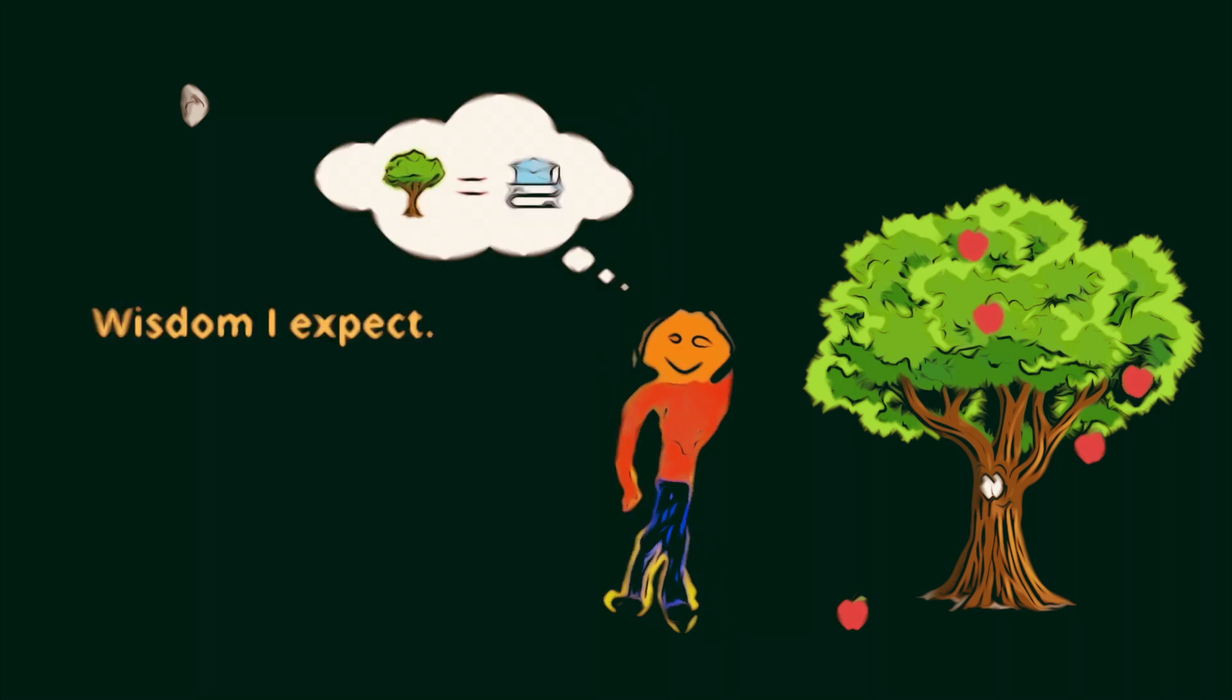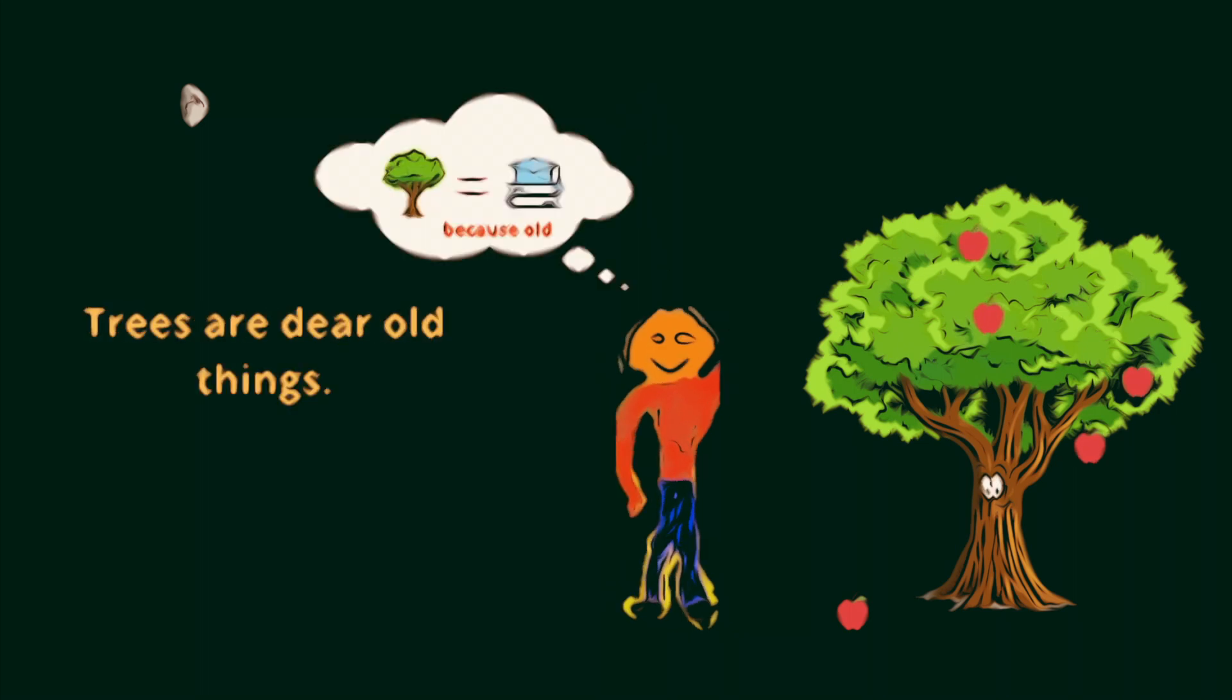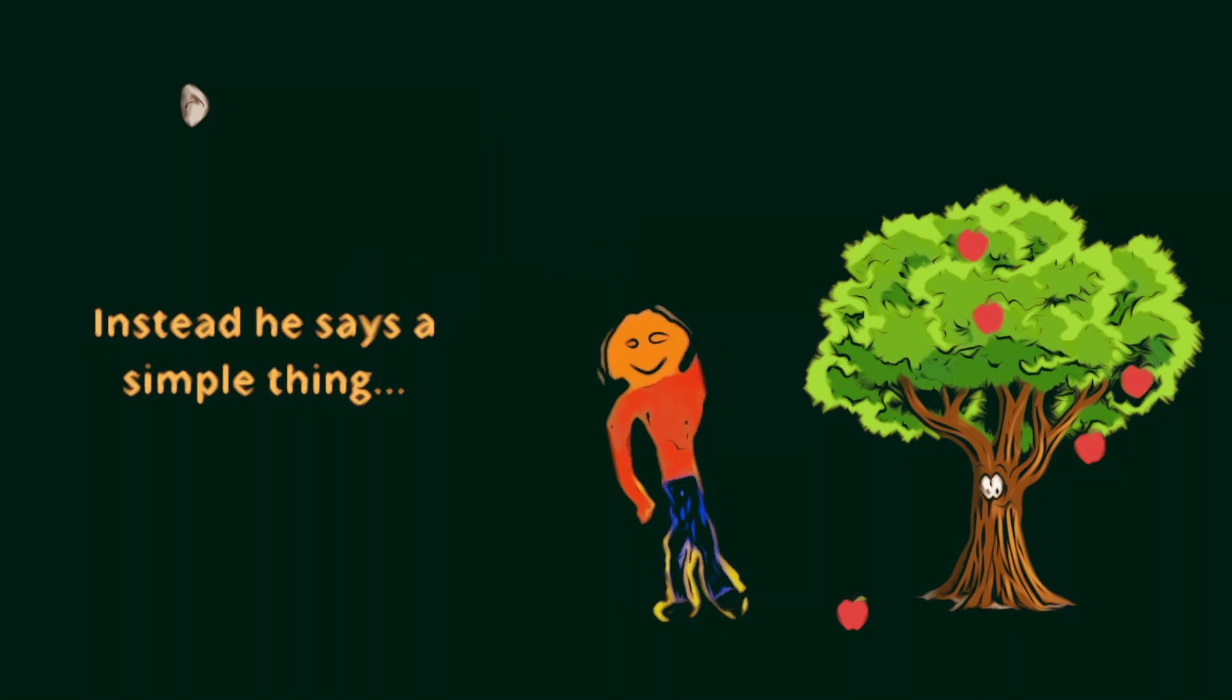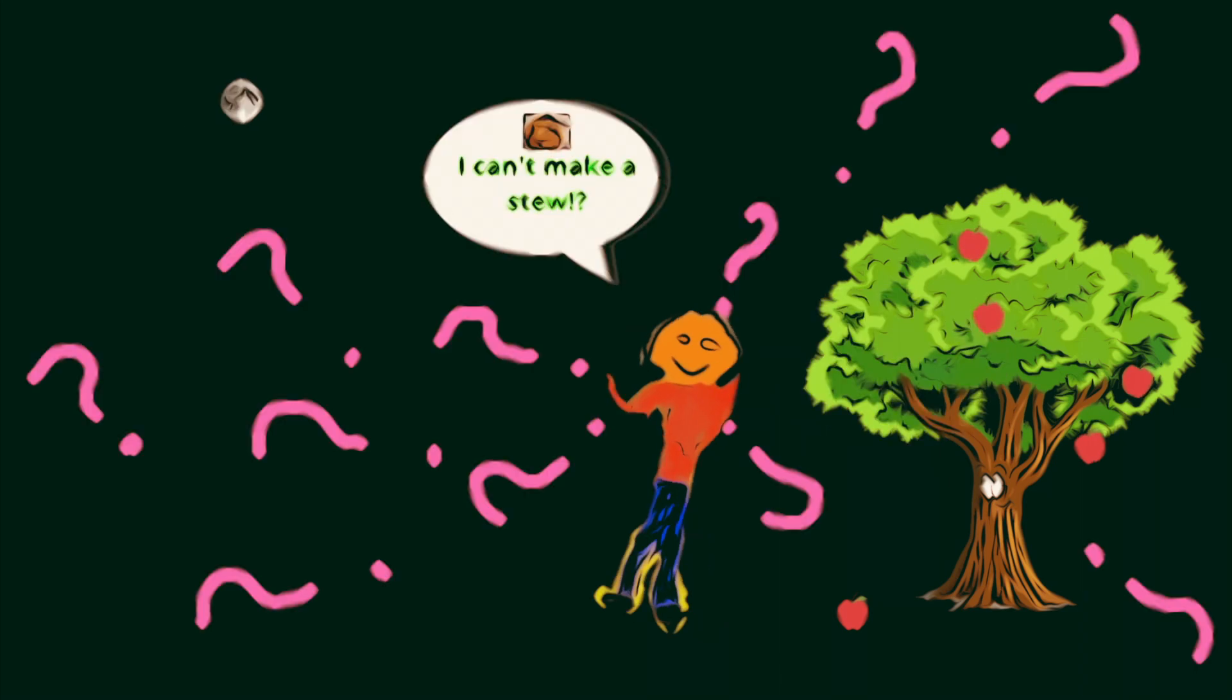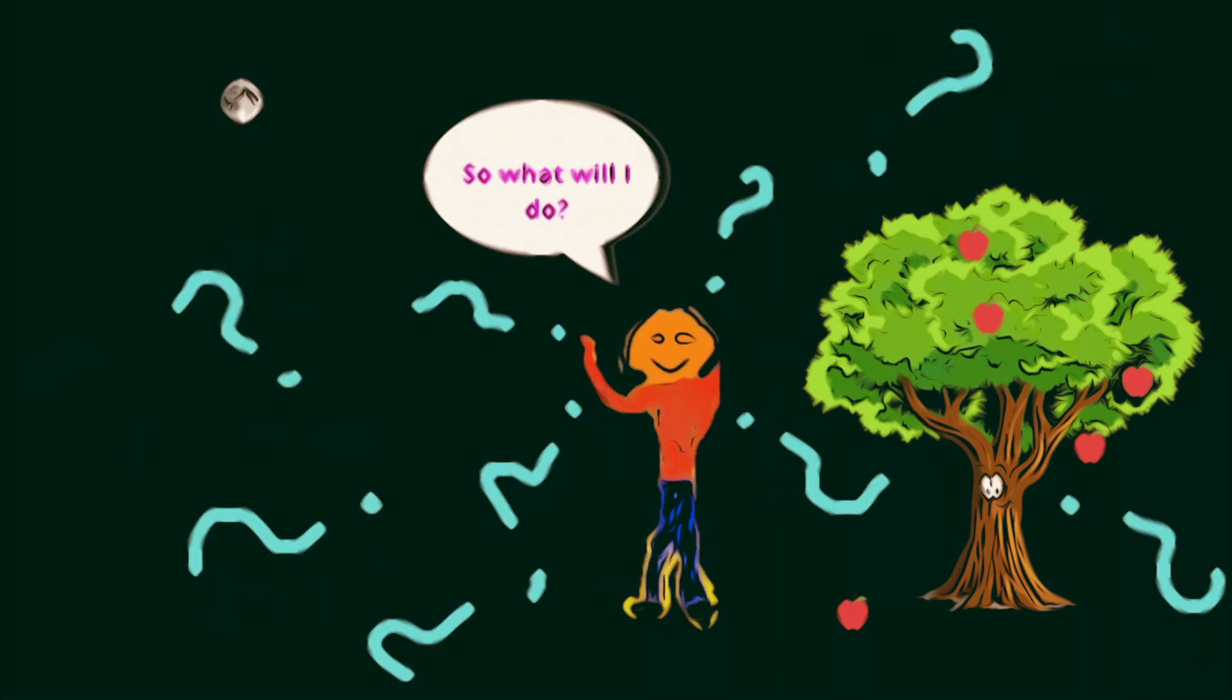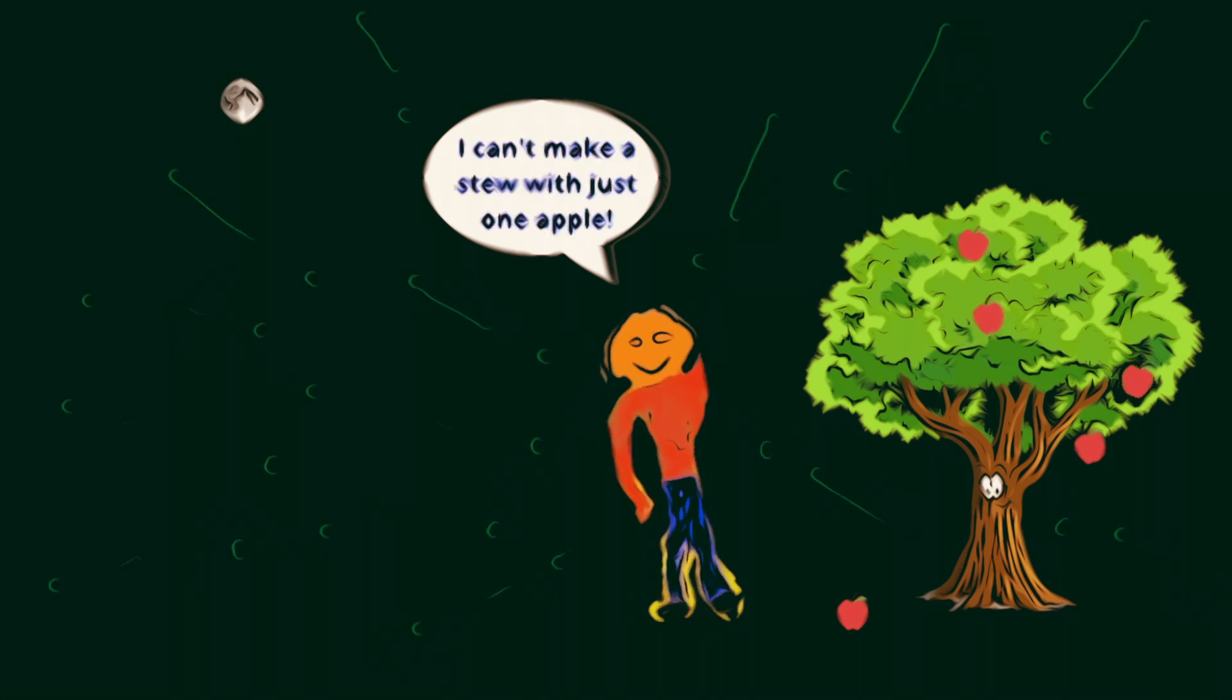Wisdom I expect. Trees are dear old things. Instead he says a simple thing, why not make a stew? I can't make a stew. So what will I do? Cause I can't make a stew with just one apple.